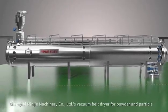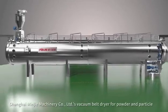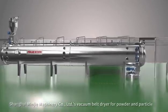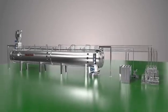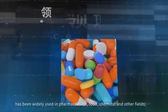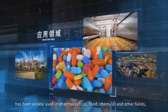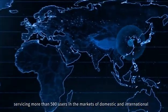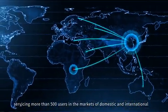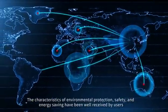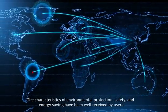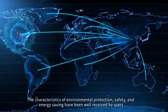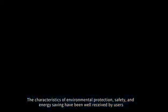Shanghai Minji Machinery Co. Limited's vacuum belt dryer for powder and particle has been widely used in pharmaceutical, food, chemical, and other fields, servicing more than 500 users in domestic and international markets. The characteristics of environmental protection, safety, and energy saving have been well received by users.